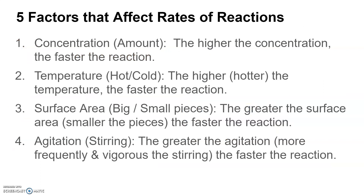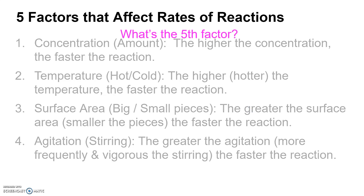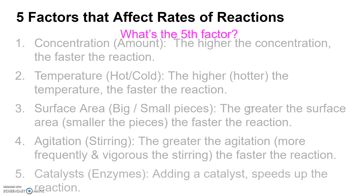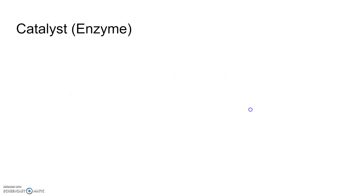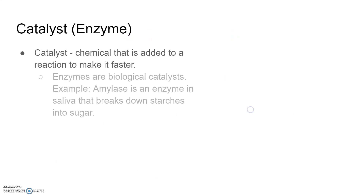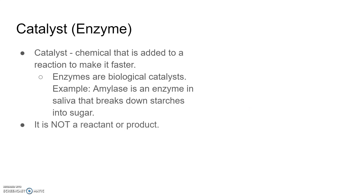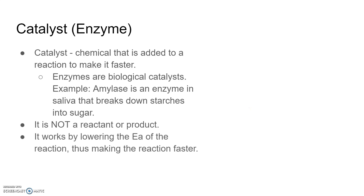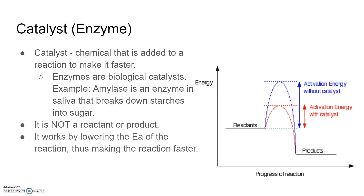Now for the fifth factor: catalyst or enzyme. Adding a catalyst speeds up the reaction. A catalyst is a chemical you add to a reaction to make it faster — it is not a reactant or product. In biology, catalysts are known as enzymes; for example, amylase is an enzyme in your saliva that breaks down starches. A catalyst works by lowering the activation energy, thus making the reaction faster. On a reaction profile, the uncatalyzed reaction has a higher activation energy (blue), while the catalyzed reaction has a lower activation energy (red).